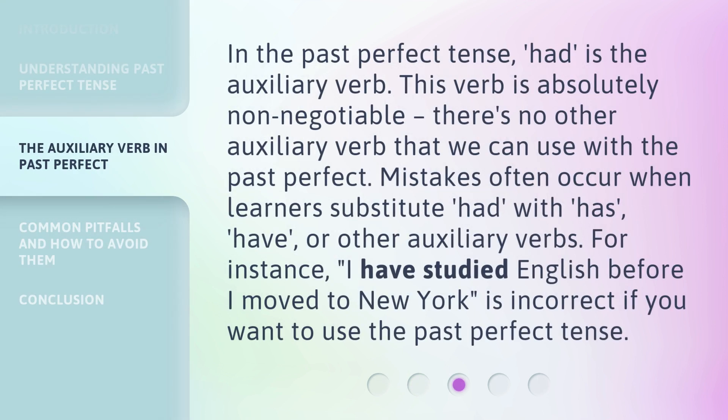In the past perfect tense, "had" is the auxiliary verb. This verb is absolutely non-negotiable. There's no other auxiliary verb that we can use with the past perfect. Mistakes often occur when learners substitute "had" with "has," "have," or other auxiliary verbs.